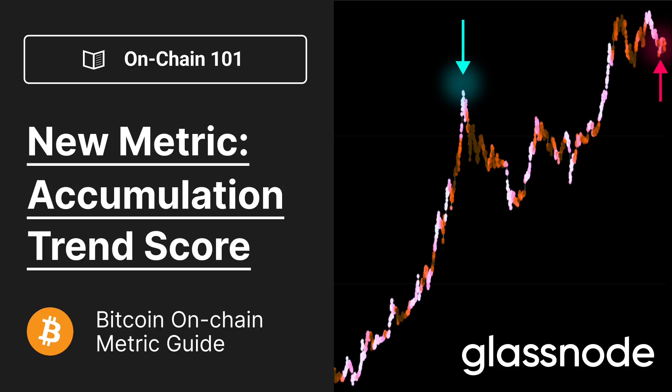This is a metric that boils down a number of concepts, including the size of entities that are accumulating coins, as well as whether there's a large portion of the market that are currently adding to their balance. So let's get started.